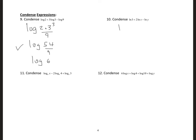The next condensing example uses natural log. We have 3, then x — using the power property — so x squared, divided by y. This condenses to natural log of 3x squared over y.